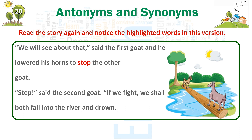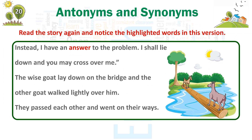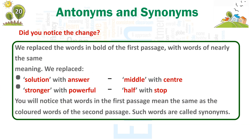'Stop,' said the second goat. 'If we fight, we shall both fall into the river and drown. Instead, I have an answer to the problem. I shall lie down, and you may cross over me.' The wise goat lay down on the bridge, and the other goat walked lightly over him. They passed each other and went on their ways. Did you notice the change? We replaced the words in bold of the first passage with words of nearly the same meaning: solution with answer, middle with center, stronger with powerful, and halt with stop.